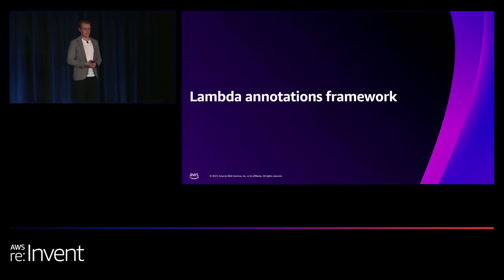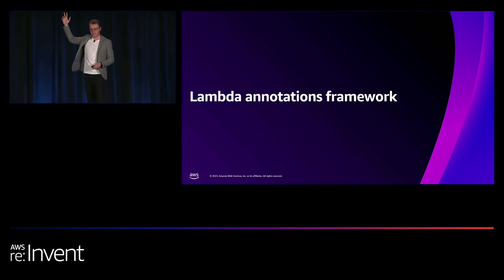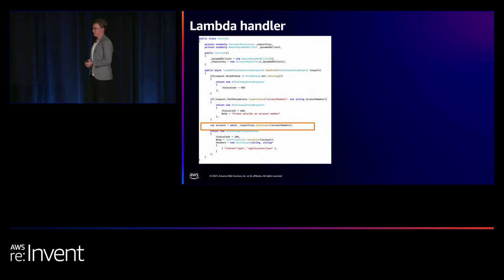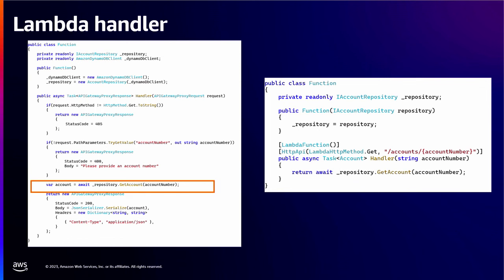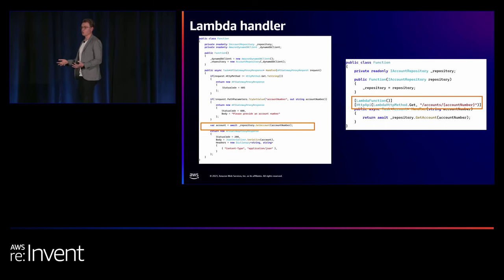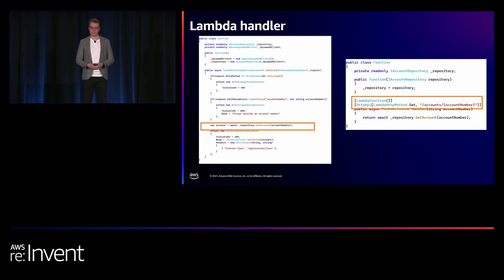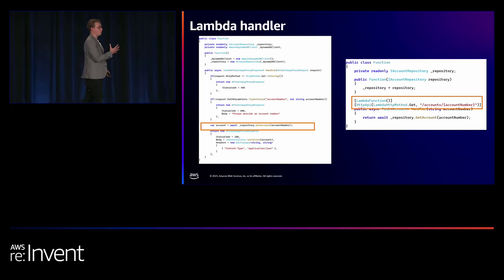This is where the Lambda Annotations Framework comes in. Let's revisit that single-purpose handler where you had just a single line of code for business logic. Written using Lambda Annotations, the same application becomes simple and focused purely on your business logic. It's just a method with two attributes: Lambda Function, which tells Lambda Annotations this method is its own independent Lambda function, and HttpAPI, which tells it you're putting an API in front of it. This works using .NET source generators — at compile time, Lambda Annotations generates all of that boilerplate code for you.